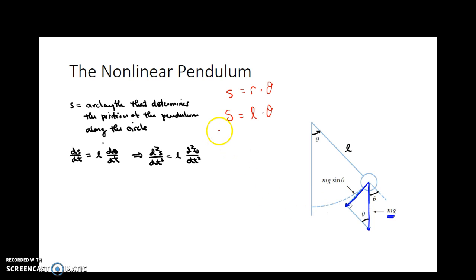So that means that the derivative of the arc length with respect to time is going to equal length, which is constant, times the derivative of the angle with respect to time. So basically, S prime equals L times theta prime. So that gives us this function here. And now if I take its second derivative, that's just going to give me the second derivative with respect to S equals the length times the second derivative of the angle with respect to time.